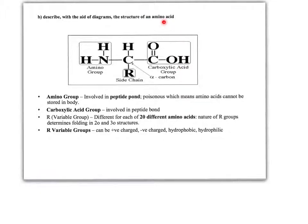Essentially an amino acid is a central carbon atom attached to four groups. One is simply a hydrogen atom. One is a carboxylic acid group — this arrangement of carbon double bonded with oxygen, and then carbon bonded to OH. This group is what we encounter whenever we come across an organic acid, whether it's a fatty acid, ethanoic acid, or in this case an amino acid.